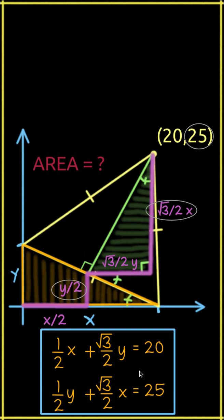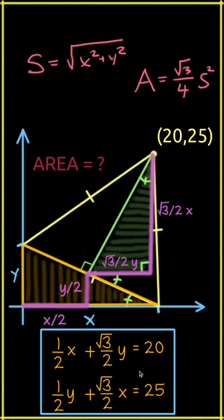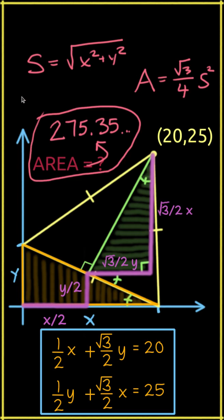With these two equations and two unknowns and a calculator, we can compute x and y and the rest is not too bad. The Pythagorean theorem gives us the side length s from x and y. And finally, the square root of 3 over 4 times s squared gives us the area, which is 275.35 approximately.